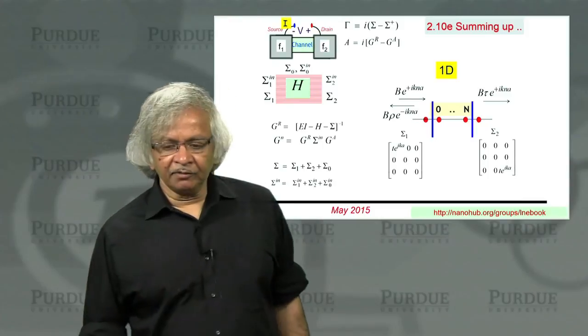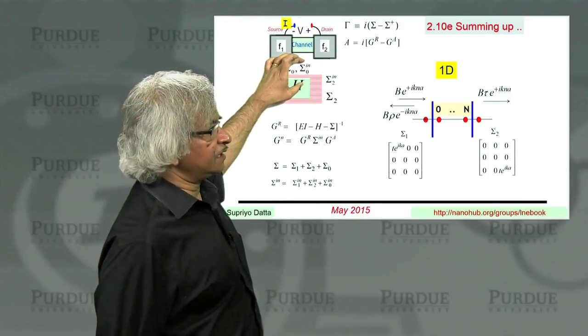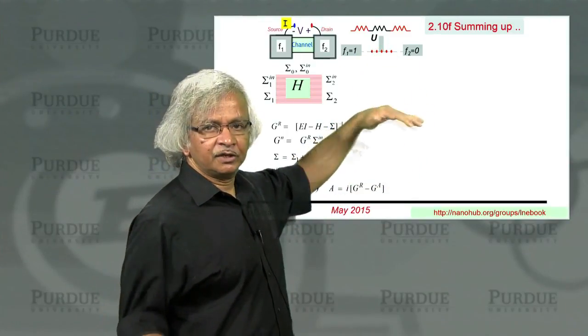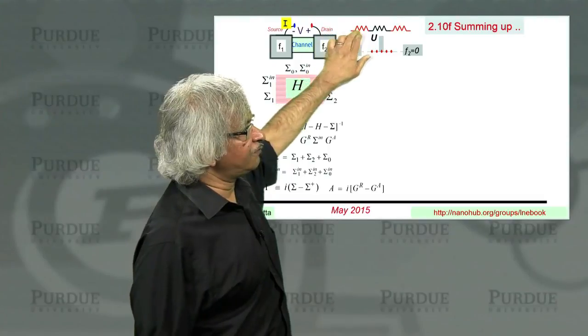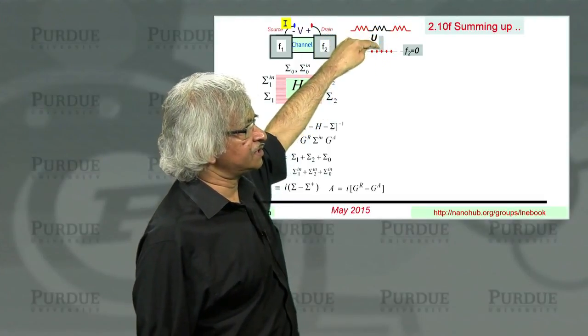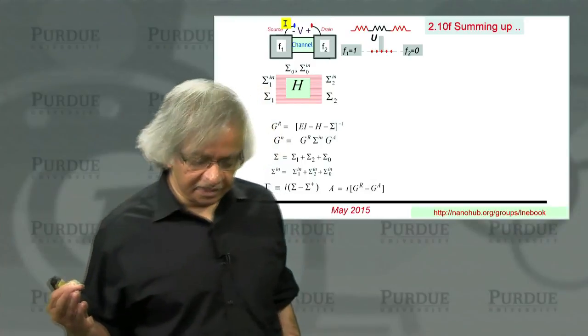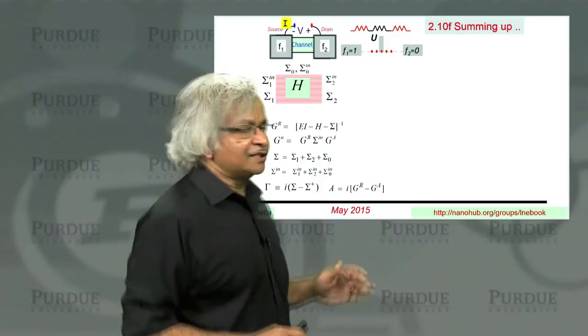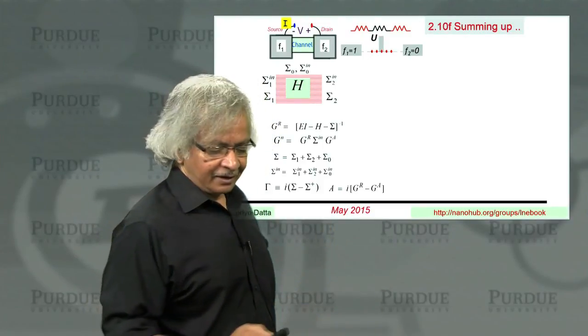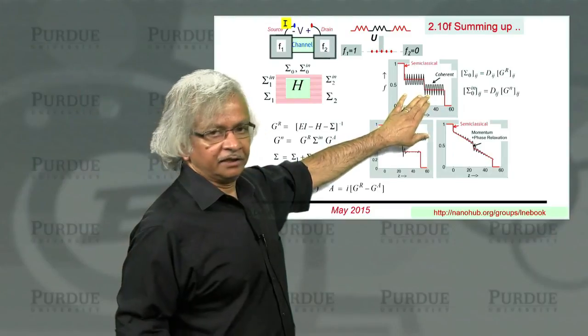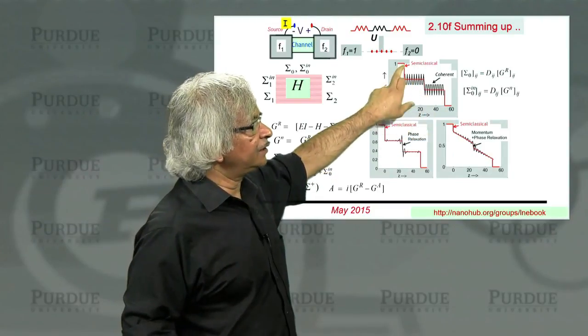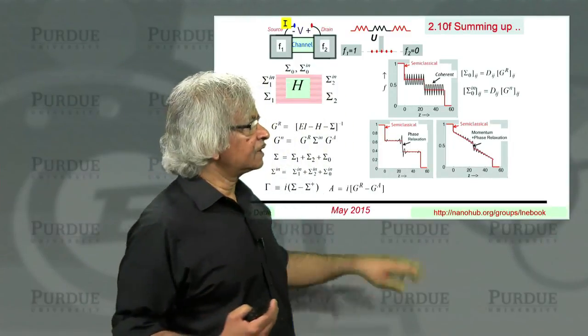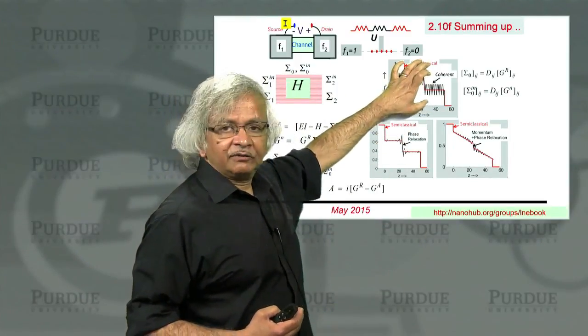The other example we went through is one that involved the dephasing contact. This is where we took this example of a wire with a barrier. Our simple view would be there's an interface resistance and then there's a resistance due to the barrier. This is a problem that we discussed at length in part A of this course. And the question is, now that we have a quantum model, what do we get? If you use a coherent theory, then you get all these oscillations which indicate quantum interference effects.